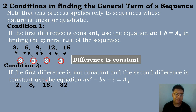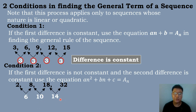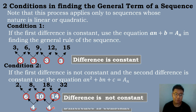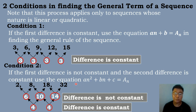Let's get the first difference. So 8 minus 2 is equal to 6, and 18 minus 8 is equal to 10, and 32 minus 18 is equal to 14. So the difference is not constant. Therefore, we will get again the difference. So 10 minus 6 is equal to 4, and 14 minus 10 is equal to 4. So this time, the difference is constant. Therefore, we'll be using the formula of the quadratic equation: a n squared plus b n plus c is equal to a sub n.